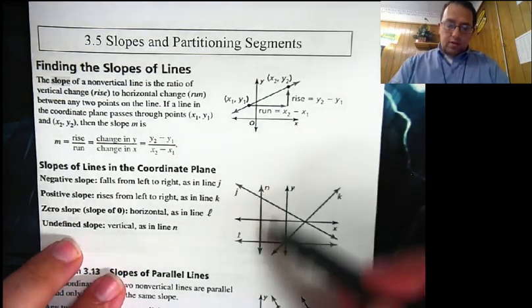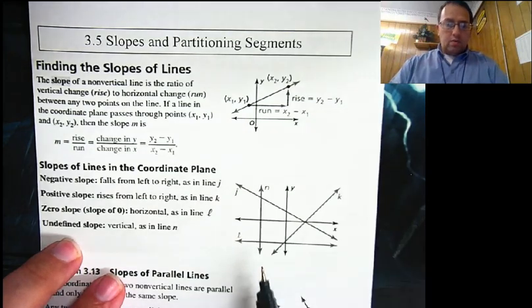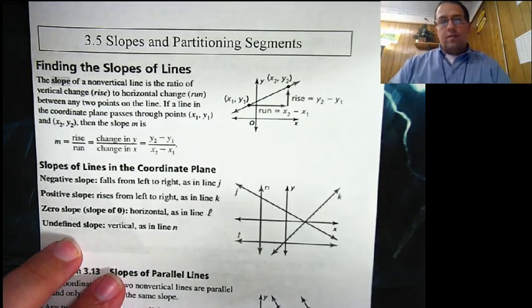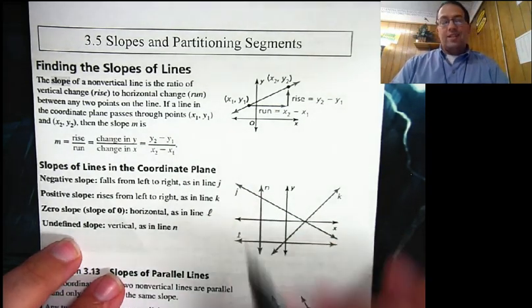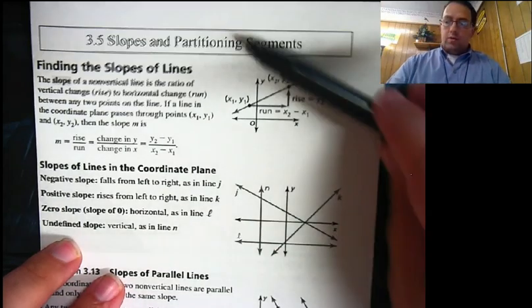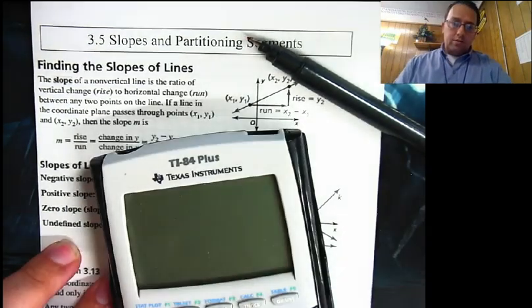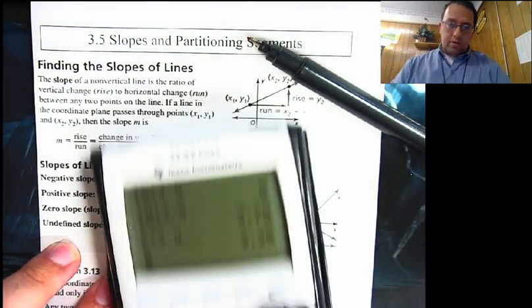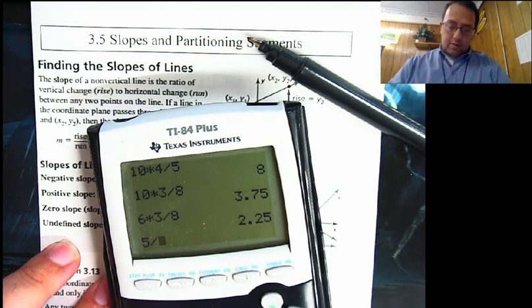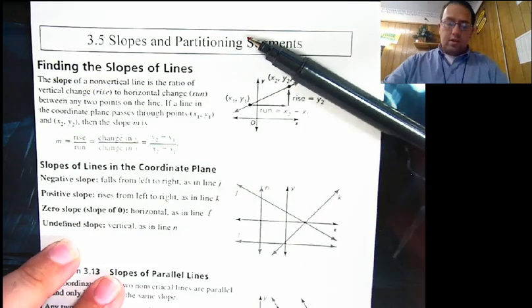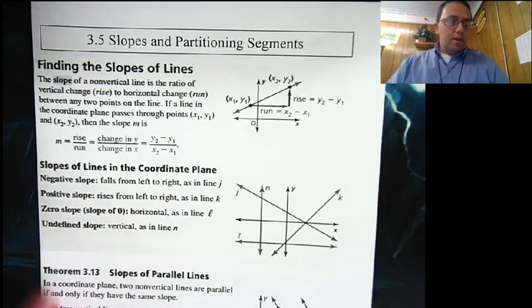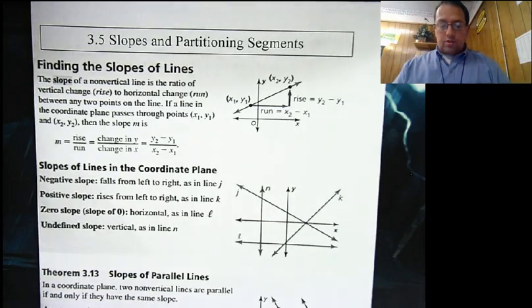Vertical lines, like line n, have an undefined slope. Because rise over run — our rise maybe is going up five, but then it's divided by zero. And we cannot divide by zero. Five divided by zero is error — divide by zero. Can't happen. Not going to do it. Unless you're Chuck Norris. And that is slope.